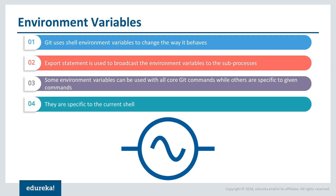The second option is environment variables. Git will always run inside the bash shell and uses a number of shell environment variables to determine how it behaves. The export statement is used to broadcast environment variables to subprocesses. These export statements are more like Git configuration commands rather than general Linux export statements. Some variables can be used with all core Git commands while some are specific to given commands, and these are all specific to the current shell.